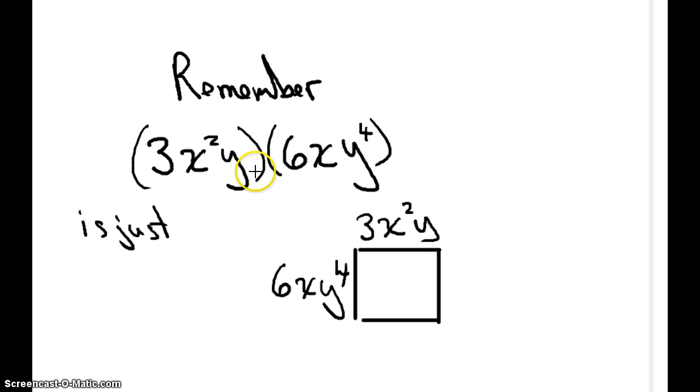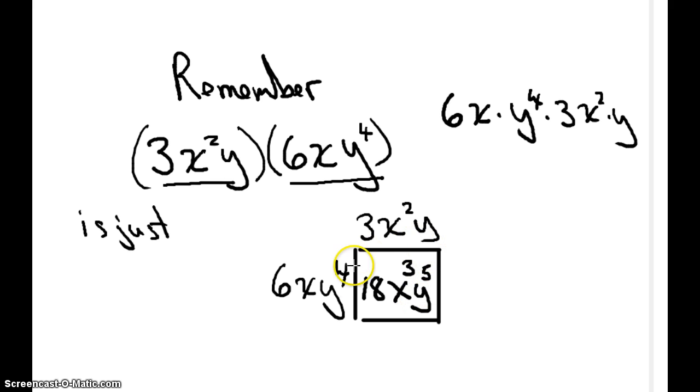Which brings me to this point. Because if I give you a binomial times a binomial, it's just 6xy to the fourth times 3xy squared. As we already know, we know how to multiply that. 6 times x times y to the fourth times 3 times x squared times y. Which gives me 18x to the third, y to the fifth. None of these rules that we've learned up to this point have changed.